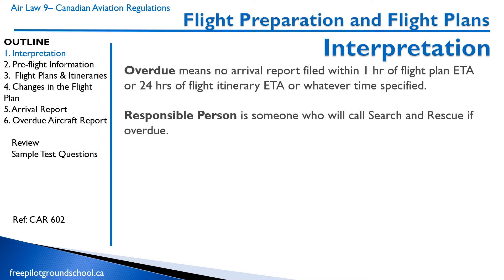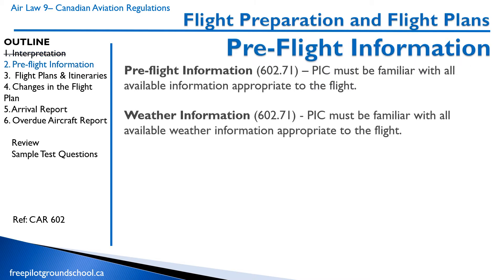A responsible person is somebody who will call search and rescue if you're overdue. This responsible person does not need to be of any specific age; they don't need to have a pilot's license. They can be anyone that will say, 'okay, if you don't show up when you say you're going to show up, I'm going to call the police or I'm going to call the search and rescue people.' This should be pretty obvious, but a lot of people neglect to do this.